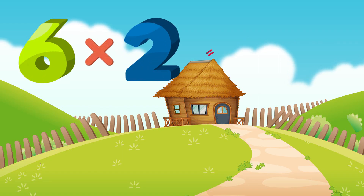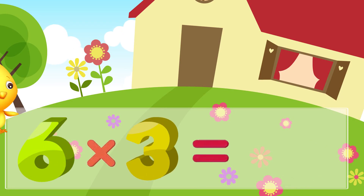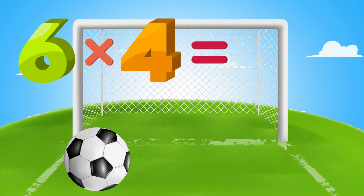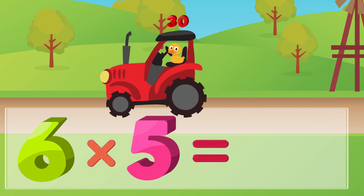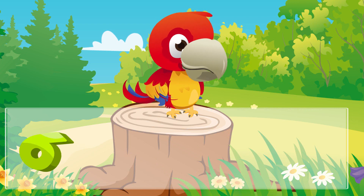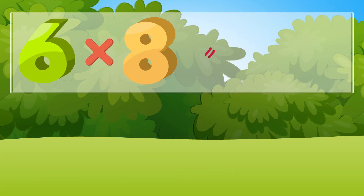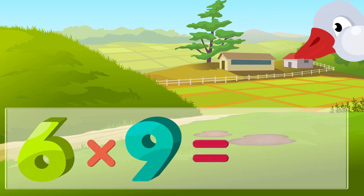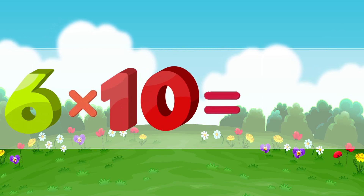Let's sing again. Six times two is twelve, six times three is eighteen, six times nine is fifty-four, six times ten is sixty.